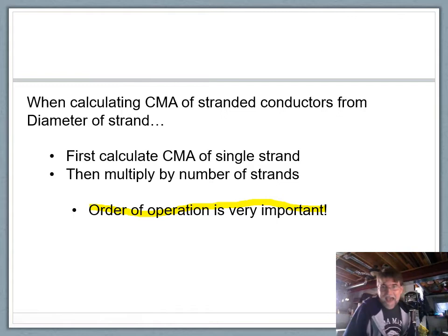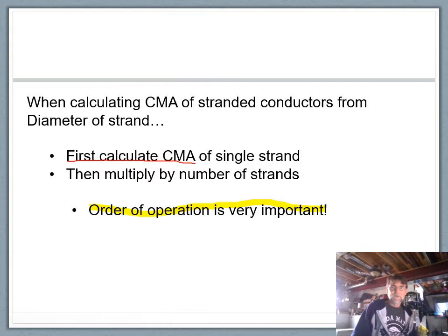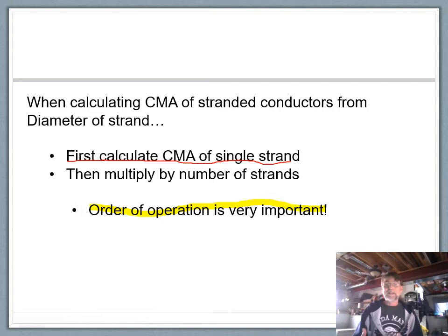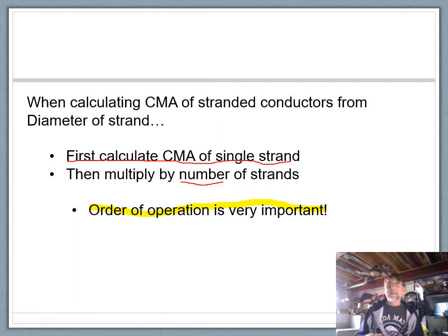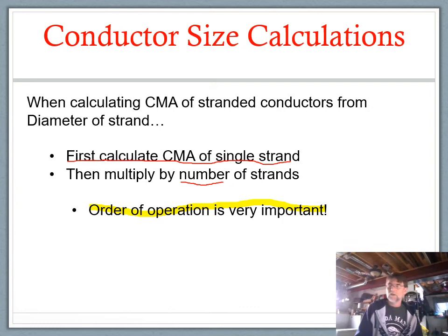If you're given a question that tells you the diameter of a strand and your task is to find the circular mil area of the entire conductor, step one must be: first calculate the circular mil area of a single strand. Square the strand diameter to get the circular mil area of that strand, then multiply by the number of strands. That gives you the circular mil area of the entire conductor. It's really important to do it in that order.